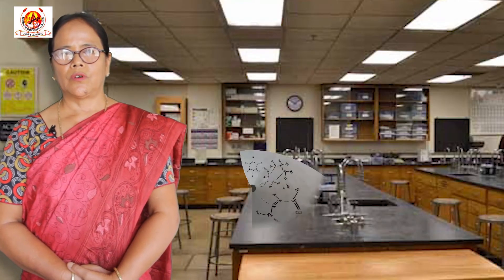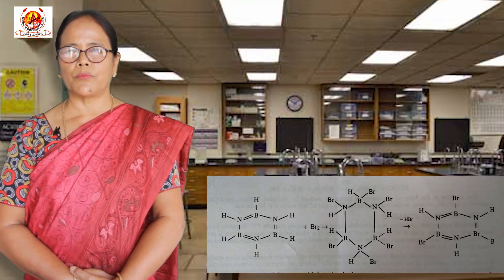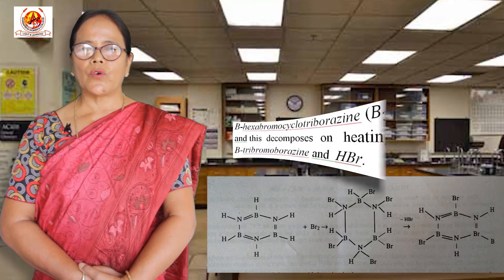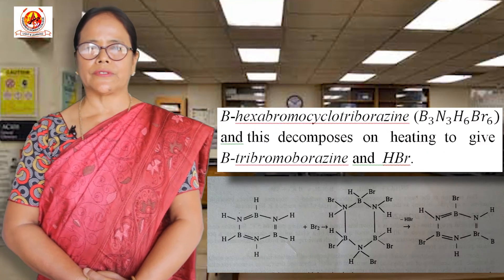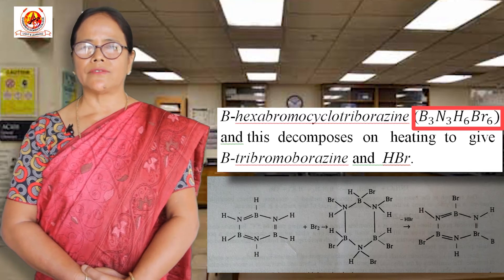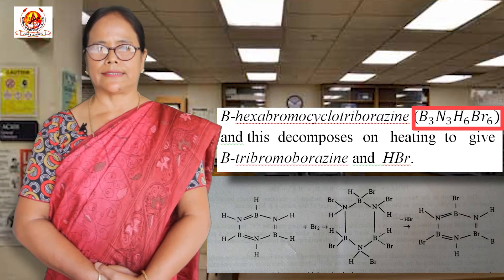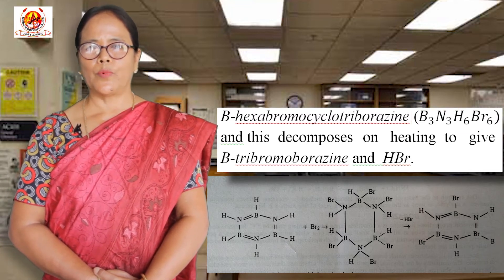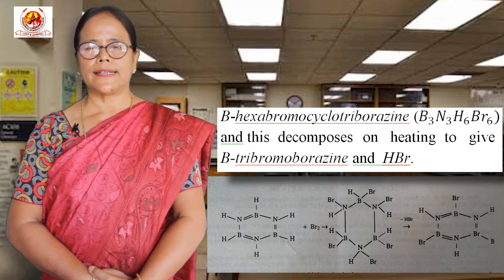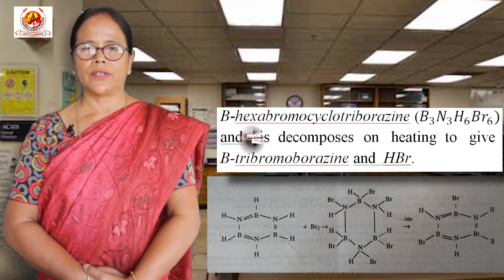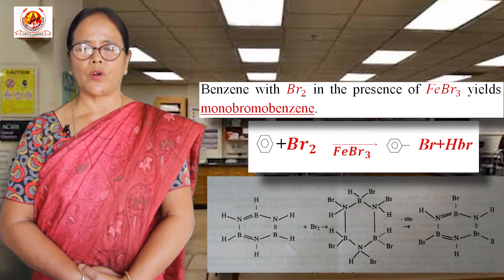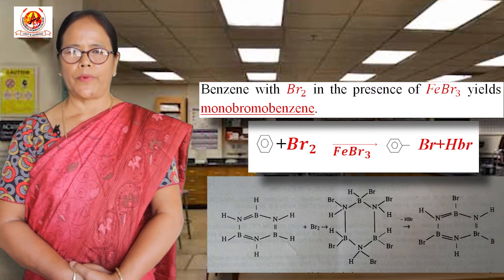Properties number two: borazine reacts with an excess of bromine to give an orange solid, boron hexabromocyclotriborazine, having the molecular formula B3N3H6Br6. This decomposes on heating to give boron trichloroborazine and hydrogen bromide. On the other hand, benzene with bromine in the presence of ferric bromide yields monobromobenzene.